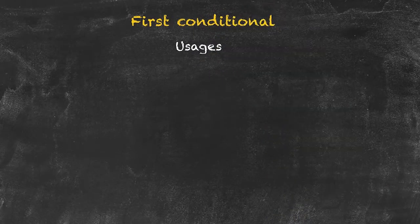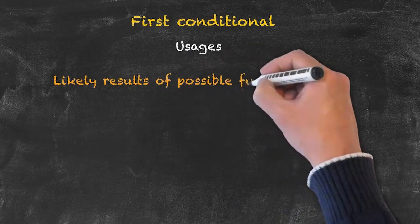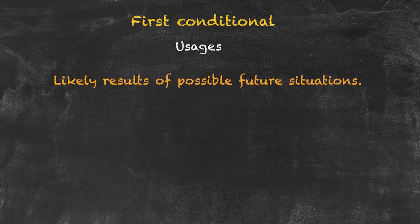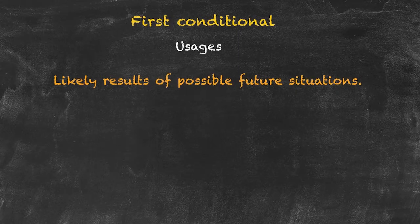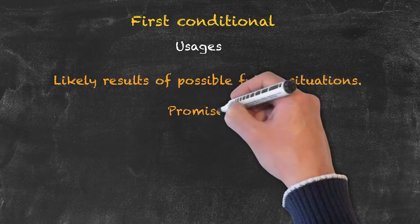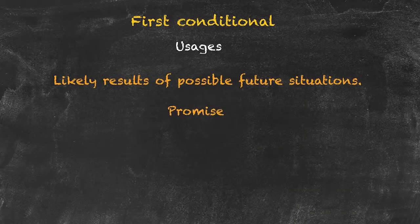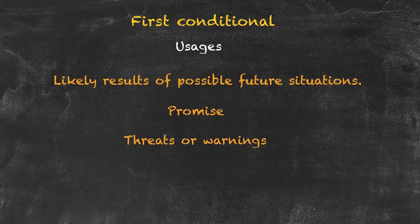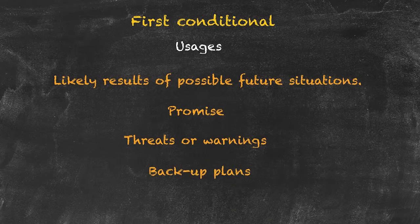Let's have a look at the usage for the first conditional. We're looking at a likely result of a possible future situation. Note that 'when' would be inappropriate here because it implies too high a level of confidence for winning the lottery. 'When' is really only used for the zero conditional. We're also looking at a promise — a promise to take somebody on a cruise if you win the lottery. It could also be used for threats or warnings: 'if you don't leave me alone, I will call the police.' And backup plans: 'if it rains tomorrow, I'll go to the cinema.'